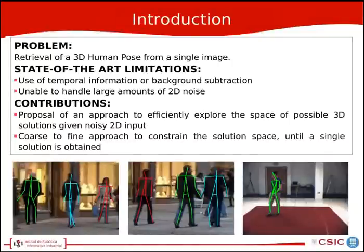The problem we attempt to tackle in this work is the retrieval of a 3D human pose from a single image. Most of the state-of-the-art limitations consist of usage of temporal information, background subtraction, and we also consider that we have to handle large amounts of 2D noise. We propose an approach to efficiently explore the space of possible 3D solutions given a noisy 2D input, and we also propose using a coarse-to-fine approach which constrains the solution space until we obtain a single solution.